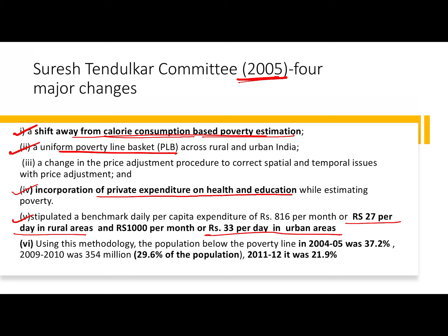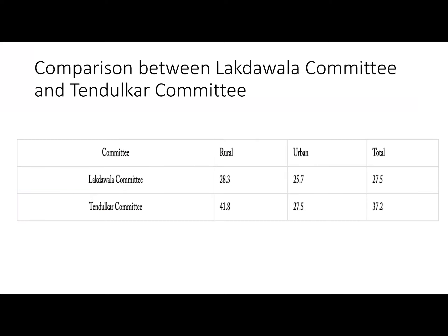The Tendulkar Committee came into major controversy because under the Lakdawala Committee, the total population below poverty line was 27.5%. But under the Tendulkar Committee, the number suddenly rose. Because of this rise in numbers, the Tendulkar Committee recommendations became controversial, but we still use them today.